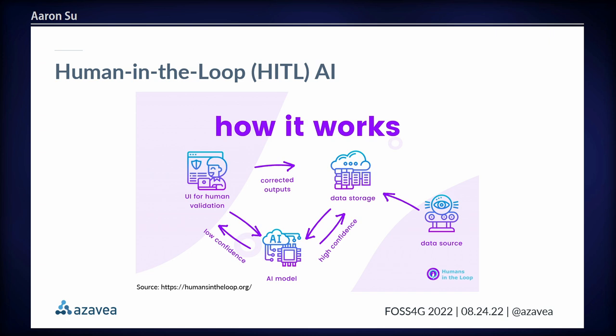To tie a bow on our diner metaphor: in this case, Mike is the human, you are the AI model, the training process happens when you cook food, your low-confidence predictions are the dishes you bring to Mike for inspection, and he corrects the outputs by telling you what you did wrong.